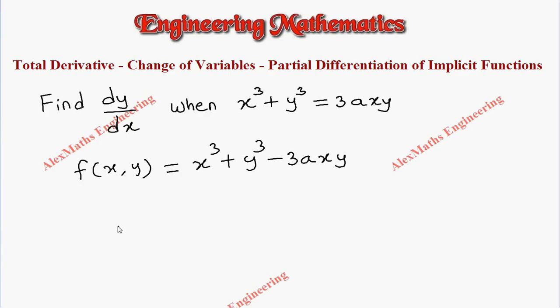The formula for total derivative dy by dx is minus partial derivative dou f by dou x whole divided by dou f by dou y.